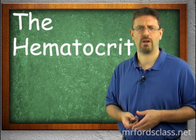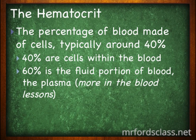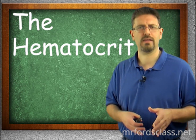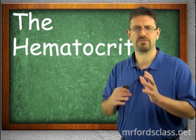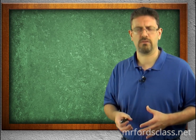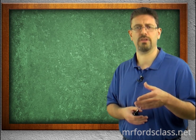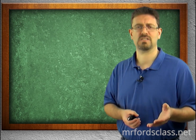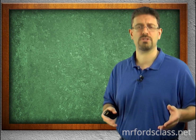The hematocrit is the percentage of blood made up of cells — typically around 40 percent — while 60 percent is plasma, the fluid component. Major contributors to blood viscosity are erythrocyte count and albumin concentrations. An increased number of cells raises the hematocrit, which increases viscosity, which in turn increases resistance to blood flow. The body needs to keep these in balance, and when we get into the urinary system, we find that its primary function is to regulate the composition of the blood.